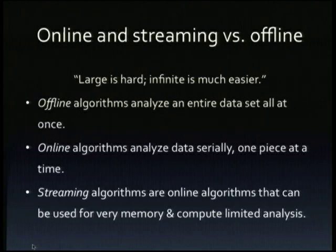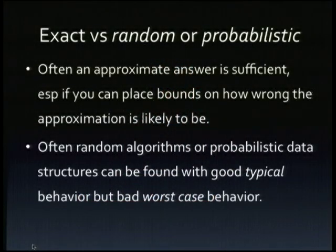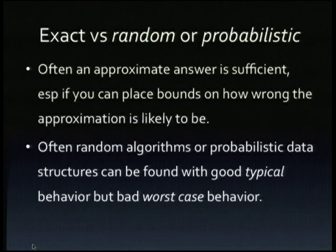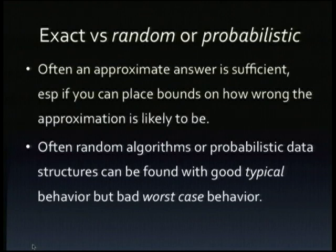There's a further distinction: streaming algorithms, where you have limited memory or limited compute. The data's coming, you have to handle it — more data is coming, you have to have handled what you were already given. And then there's the distinction between exact data structures versus random or probabilistic data structures. Often, if you just want to know how many data points are in a dataset, an approximate answer is sufficient. If you can place bounds on how wrong the approximation is likely to be, that may be good enough. And what you'll see today is that random algorithms or probabilistic data structures can have good typical behavior — most data won't give you worst-case behavior — but they may have extremely bad worst-case behavior. Computer scientists have only started to embrace them as datasets have gotten extremely large.